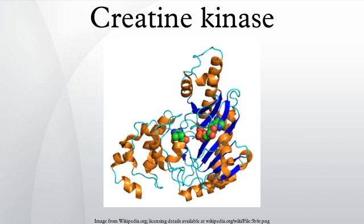In the cells, the cytosolic CK enzymes consist of two subunits, which can be either B or M. There are therefore three different isoenzymes: CK-MM, CK-BB, and CK-MB. The genes for these subunits are located on different chromosomes — B on 14q32 and M on 19q13. In addition to those three cytosolic CK isoforms, there are two mitochondrial creatine kinase isoenzymes: the ubiquitous and sarcomeric forms.